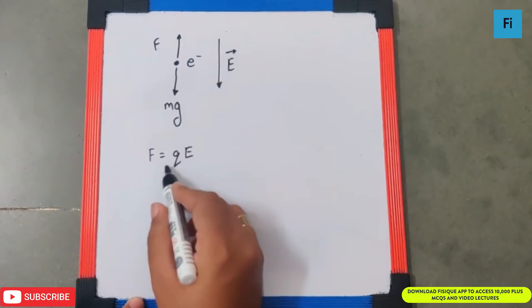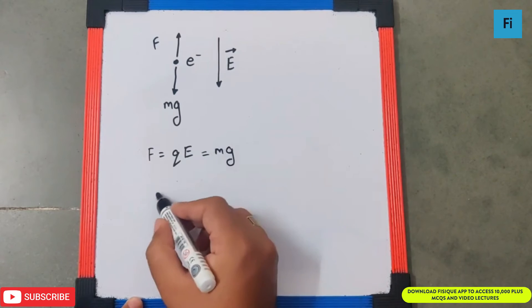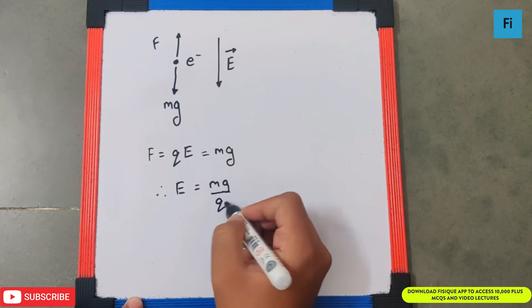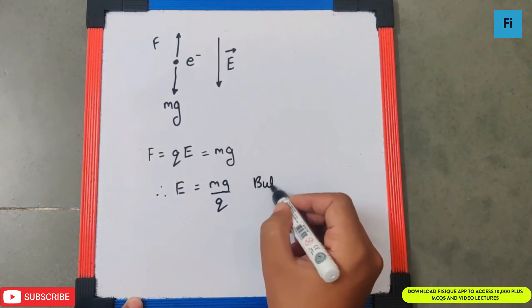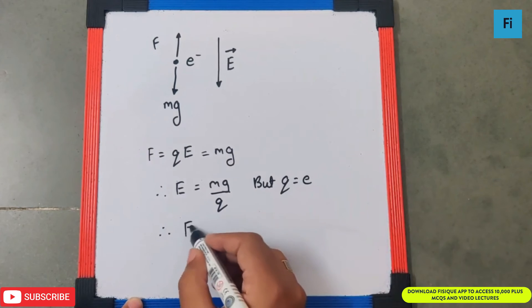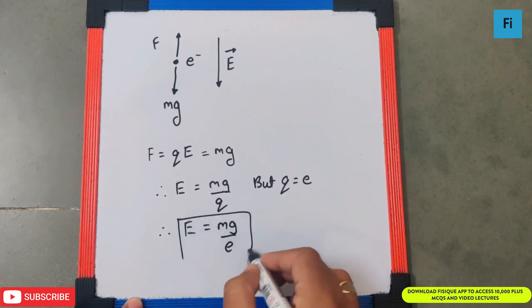That means F is equal to QE, and that is equal to MG. Therefore, we can say E must be equal to MG by Q. But Q is equal to E, therefore E must be MG by E, and that will be our final answer.